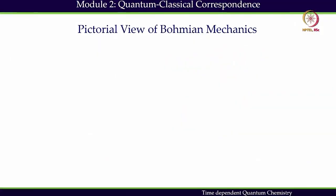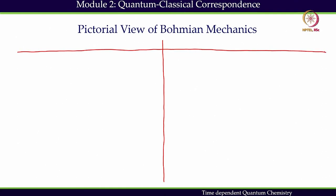What does it mean by this velocity? We will go over it soon, but before we do that we will look at a pictorial representation of what we have understood so far. This is standard quantum mechanics — the standard interpretation — and this is Bohemian Mechanics.